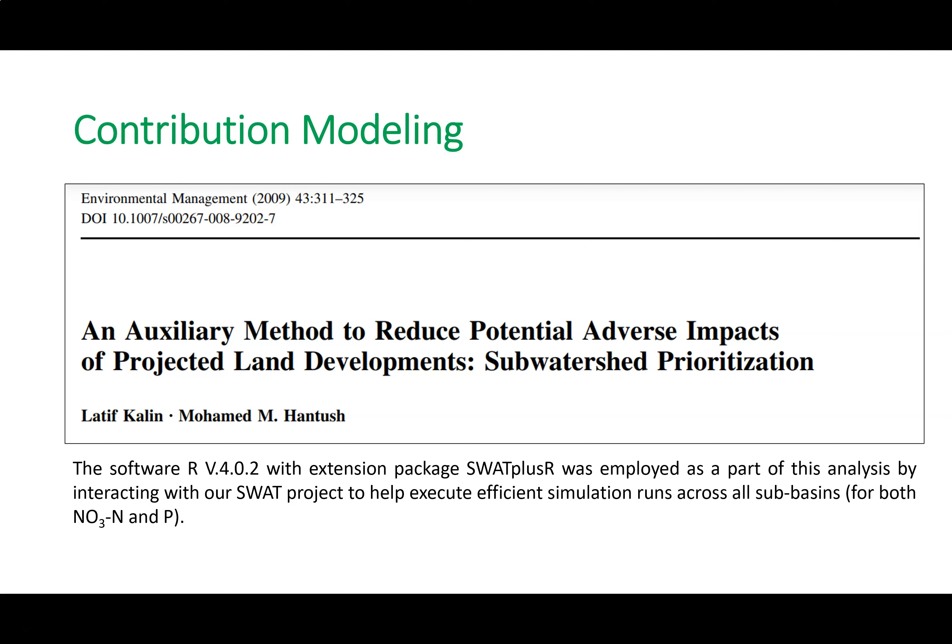Dr. Latif Kaleem published a paper in 2009 describing how to ascertain the relative contribution of each sub-basin to overall nutrient loading at the outlet of a watershed. The concept is simple: you create a fake rain gauge for each sub-basin — we had 198 sub-basins — and set zero rainfall for that sub-basin in the model, then read results in R to figure out the relative contribution of that sub-basin. Using addition and subtraction, you can be very precise in your estimates. We used this approach and are grateful to Dr. Latif Kaleem for guiding us through the technical details.